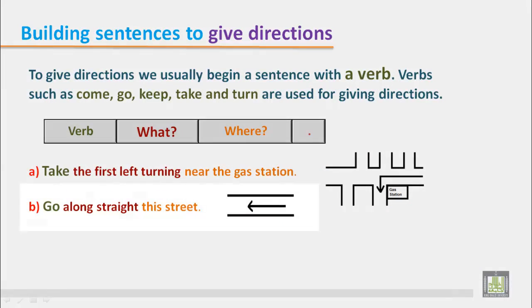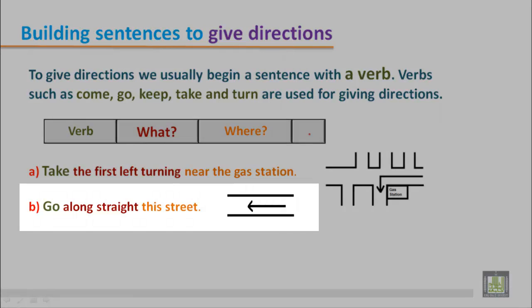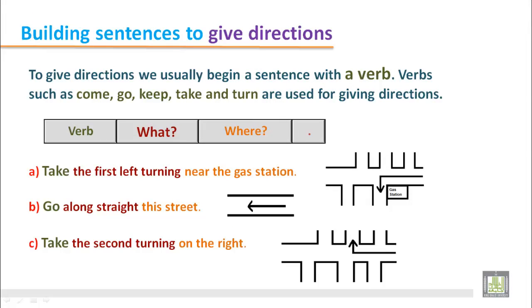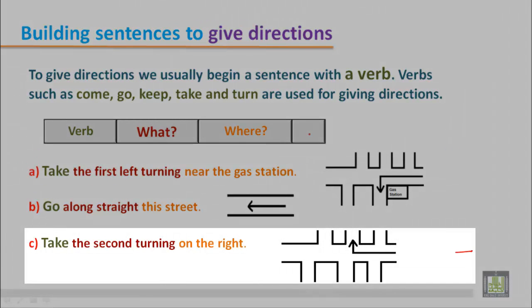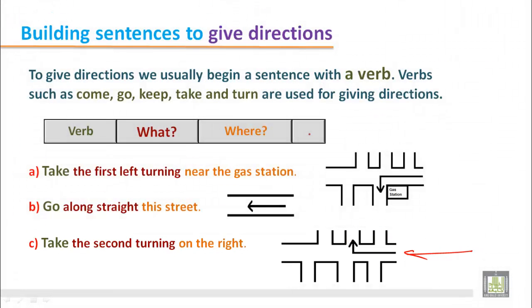Sentence b: Go straight along this street — you need not stop anywhere or take a left or right turn; just go straight along this street. Take the second turning on the right — if you are coming this way, take the second turning on your right, not the first one. We have to be careful to always begin with verbs like take, go, come, keep, and turn when giving directions.